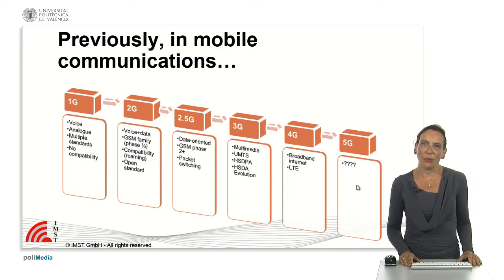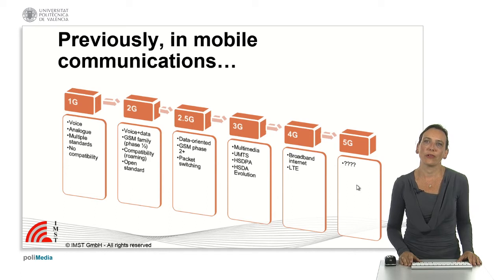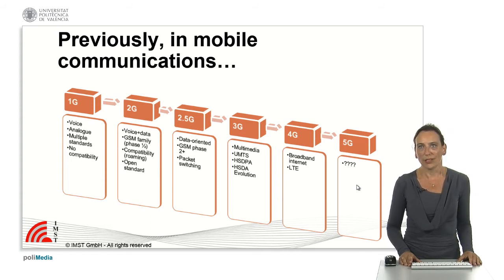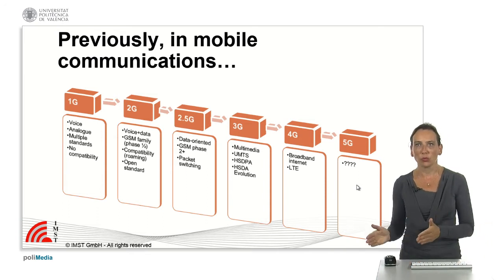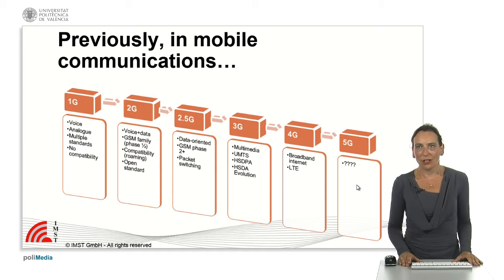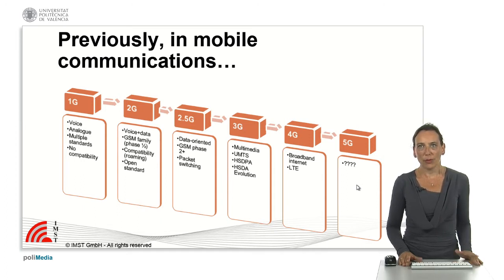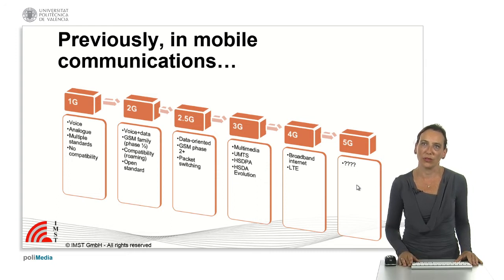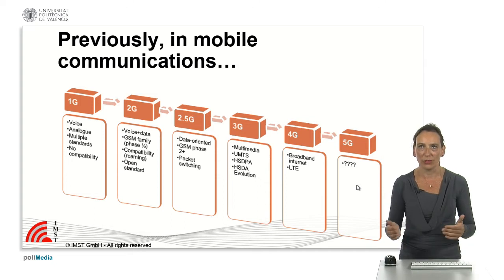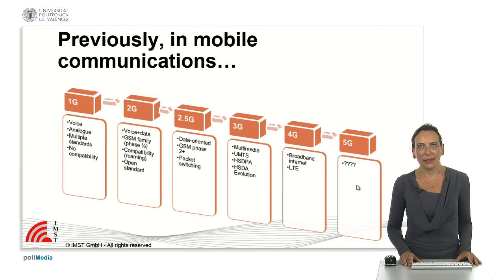To understand where we're going, we should look at what happened up to now in mobile communications. It all started about 40 years ago with the first generation, which was only oriented to voice, was analog, and suffered from the coexistence of many incompatible systems around the world — if you were within one network you couldn't move to another. That set the start for the second generation, GSM, which allowed voice and small amounts of data with compatibility between systems, so you could move between networks and even between countries.